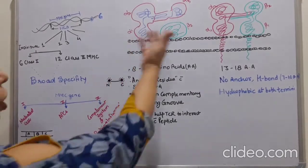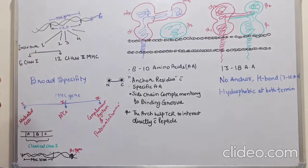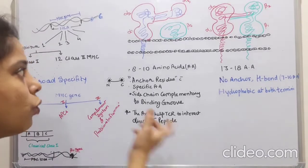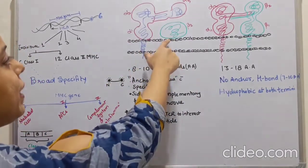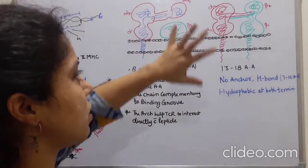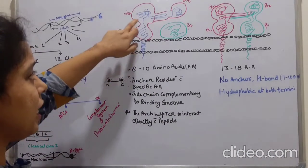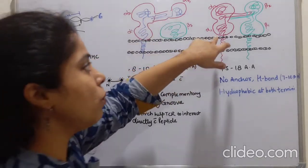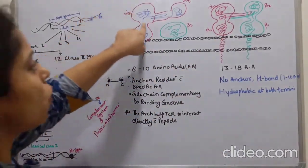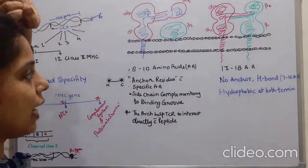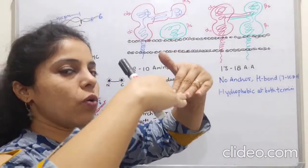Moving on to the structure of the MHC Class 1 and Class 2 molecule — as discussed in the previous lecture, the MHC Class 1 molecule is made up of the alpha chain and beta-2 microglobulin. MHC Class 2 also has a heterodimer. In Class 1, beta-2 microglobulin has no transmembrane segment and remains an external component. The alpha chain mainly has three domains, and a closed cleft is made for binding of the peptide antigen. In Class 2, the alpha and beta chains each have two domains and the cleft remains an open structure.